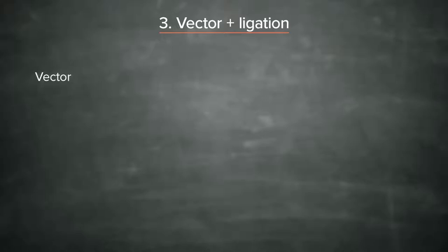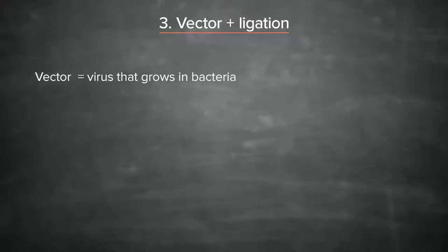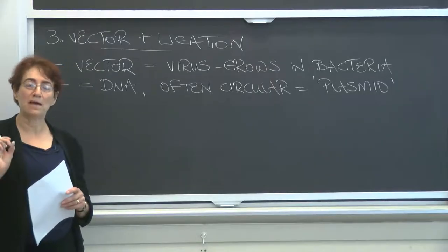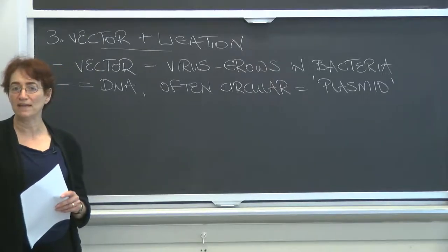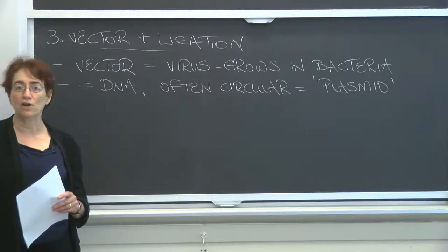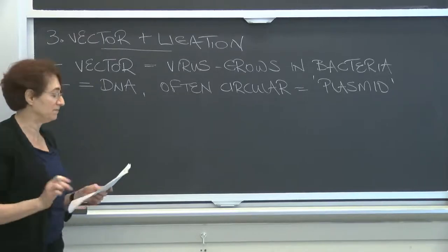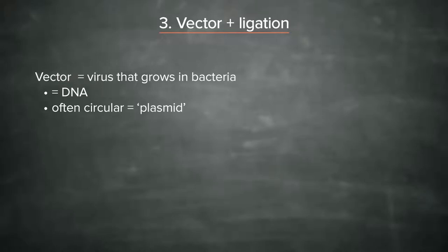A vector is really a virus that grows in bacteria. It may be pathogenic, or it may be harmless to the bacterium. The vector is made of DNA, and it is often circular, in which case it has a special name, which is a plasmid. And the trick about plasmids and any vector is that they have something called an origin of replication, abbreviated ORI.